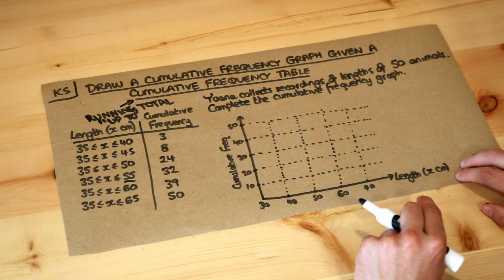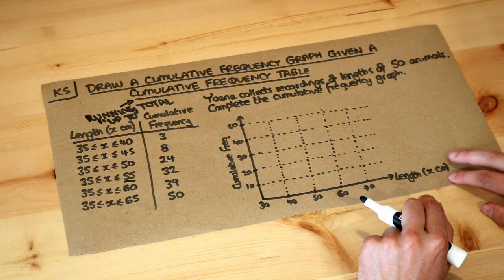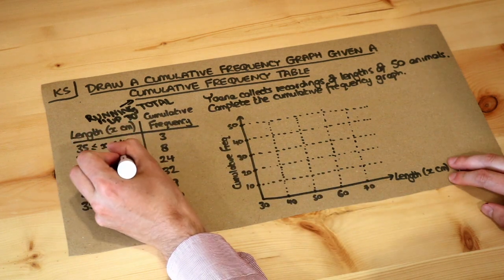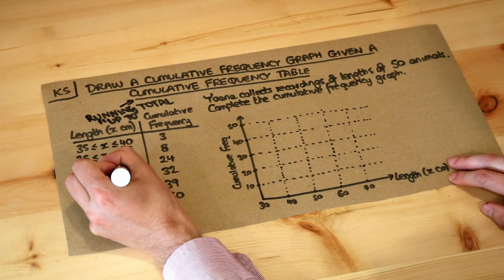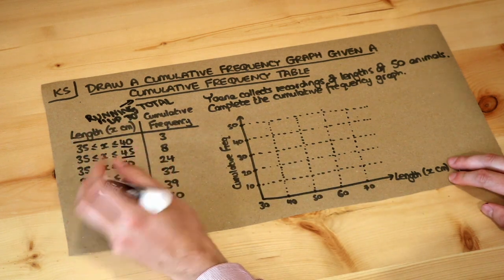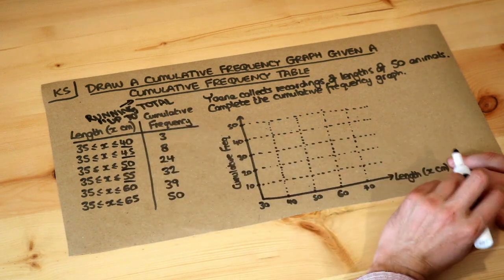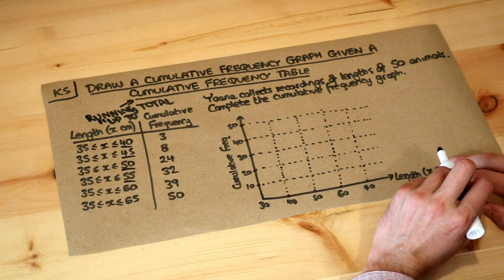It's quite easy to plot these now — we just use the value on the right of each range, the length we're going up to, paired with the cumulative frequency.